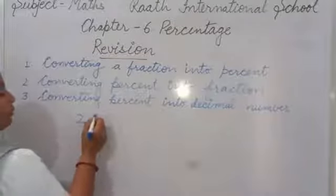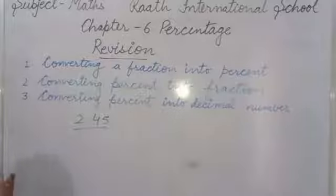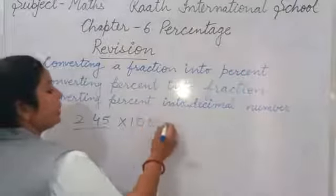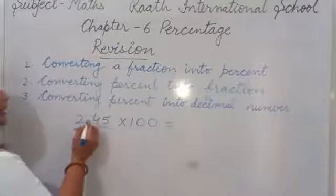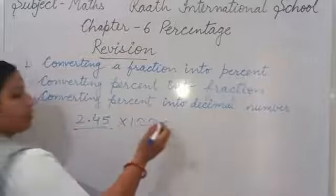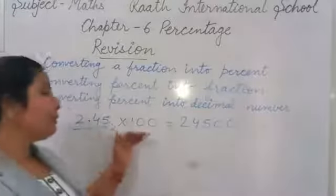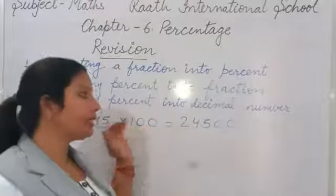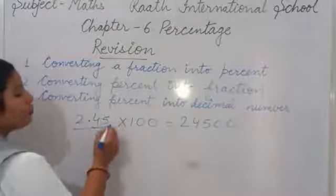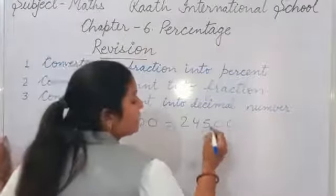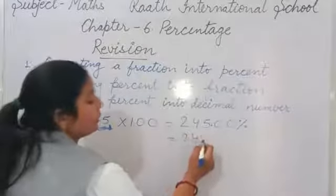So 2.45 multiplied by 100. For multiplication by 100, we forget the decimal point temporarily and multiply: 245 multiplied by 100. We count the decimal places — there are 2 decimal places in the question, so in the answer we also take 2 decimal places. So it becomes 245.00 percent, which we can say is 245 percent.